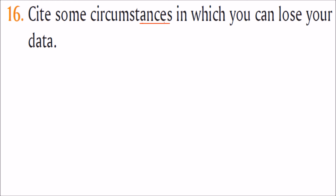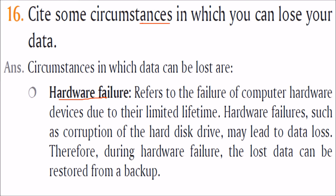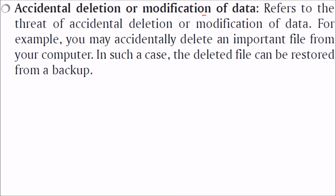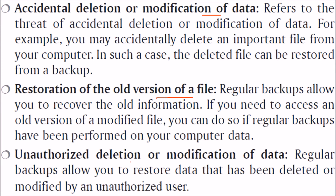Describe some circumstances in which you can lose your data. First, hardware failure — failure of a computer hardware device due to limited lifetime or power surge, such as corruption of your hard disk drive, may lead to data loss; the lost data can be restored from backup. Second, accidental deletion or modification of data — you can restore the data back from backup. Third, restoration of an old version of a file — if you need an old version that was deleted, it is in the backup. Fourth, unauthorized deletion or modification of data — if someone hacked or cracked your system and modified data, you can restore it through backup.